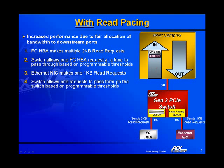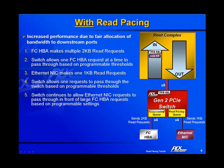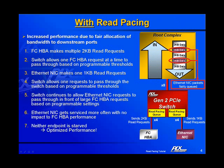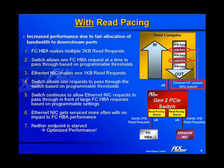The switch then allows the Ethernet NIC's read requests to pass through in front of the large Fiber Channel HBA requests, based on programmable settings. As a result, the Ethernet NIC gets serviced more often with no impact on the Fiber Channel HBA performance. Neither endpoint is starved, and performance is optimized.